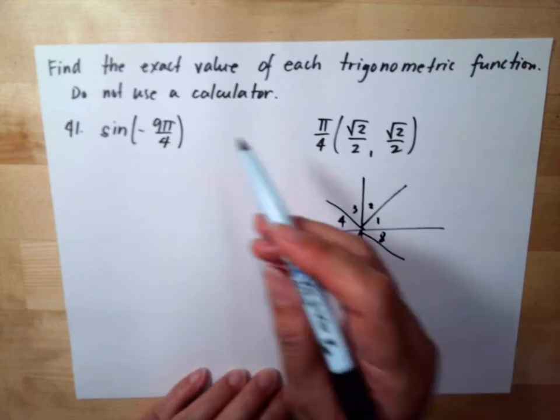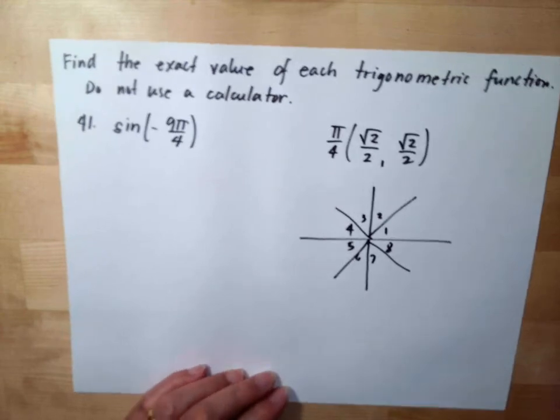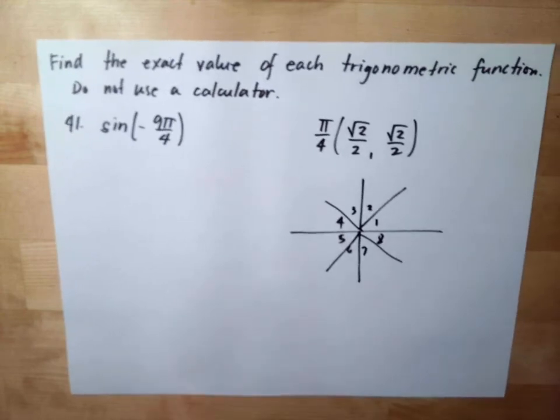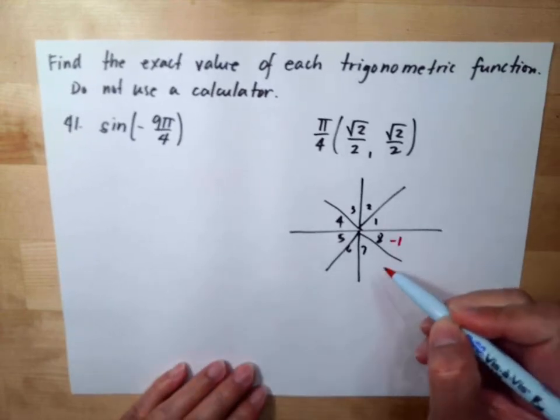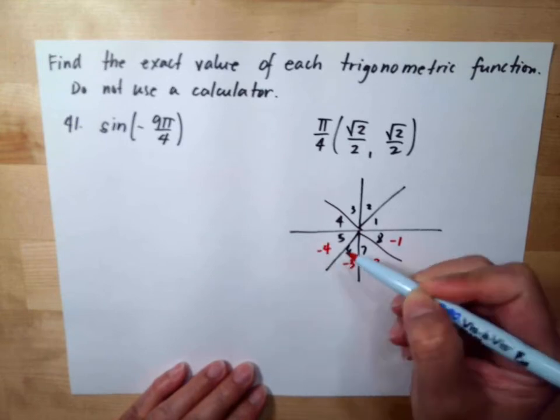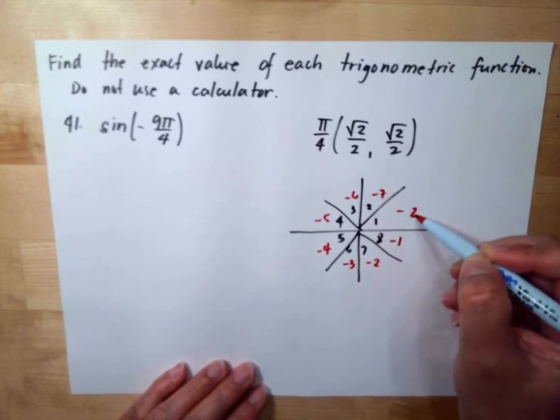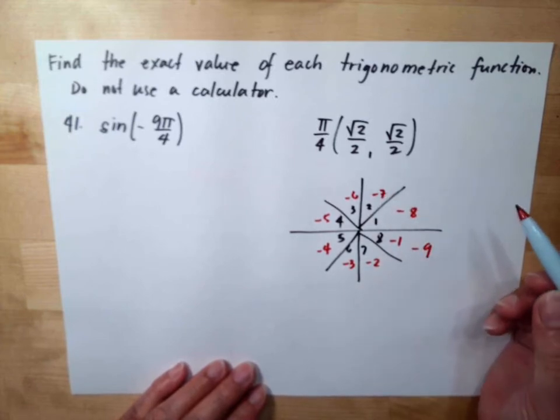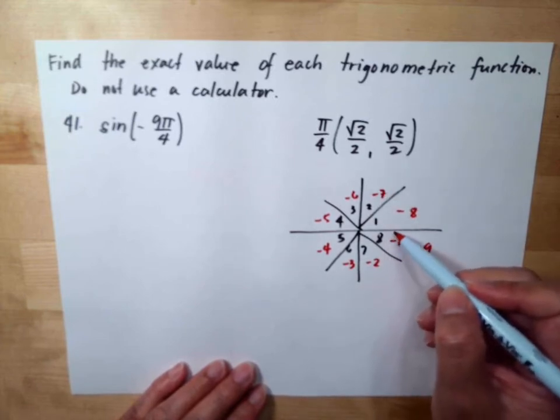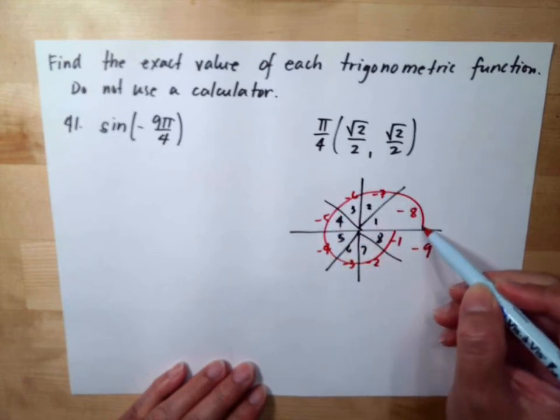But we need negative, so meaning we're doing clockwise. So we have negative 1, negative 2, negative 3, negative 4, negative 5, negative 6, negative 7, negative 8, and this is negative 9. So meaning your angle goes around like this.